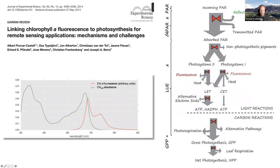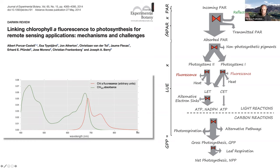I'll walk through a review to explain how we link chlorophyll fluorescence to photosynthesis for remote sensing applications. The chlorophyll AB absorbance spectrum shows peaks in the blue and red, with a minimum in the green, overlapping with chlorophyll A fluorescence peaking around 680 nm and a second peak around 740 nm, slowly decaying towards 900 nm.